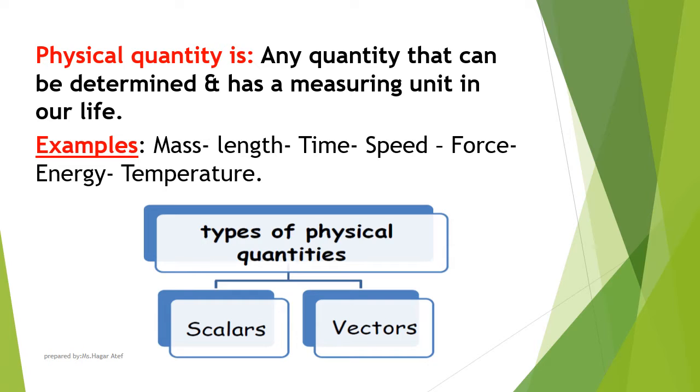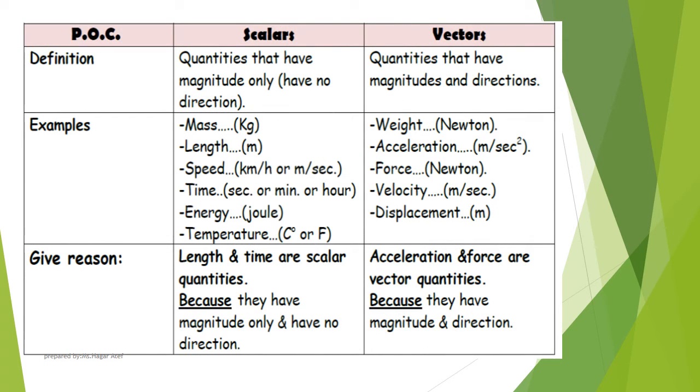Types of physical quantities: scalars and vectors. To describe a scalar physical quantity, it's enough to know its magnitude only. What's the meaning of magnitude? It's a numeric value and measuring unit.